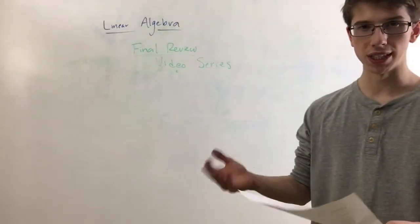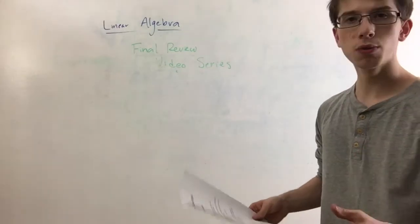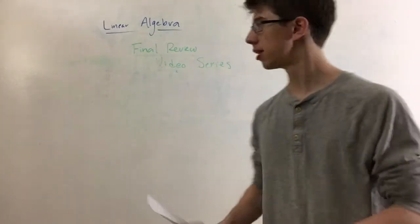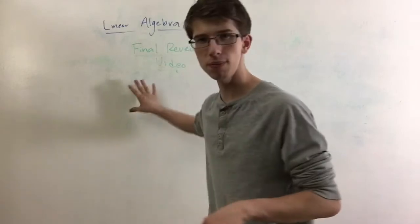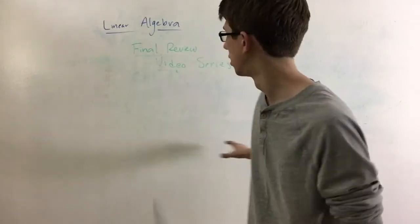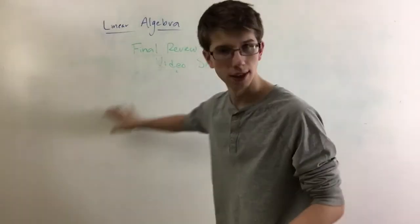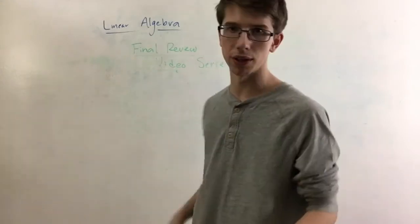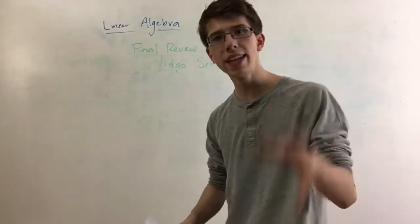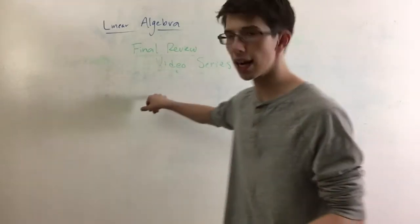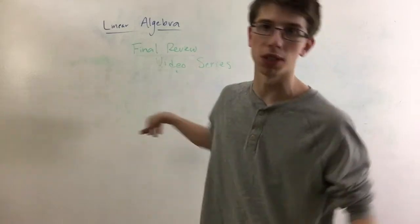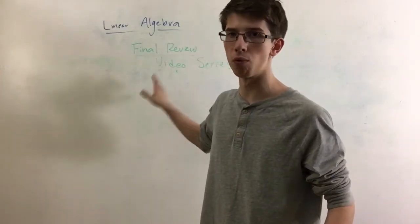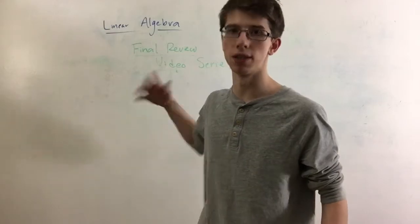Let's go through some of the essential questions. The first one is: what is a linear system? A linear system is just a system of equations that is modeled using matrices. It's a linear system because it's not saying x1 squared plus x2 squared — all the variables have an exponent of 1, which is why it's a linear system.